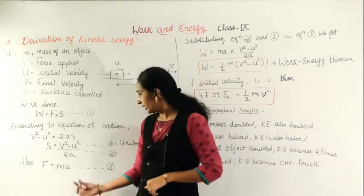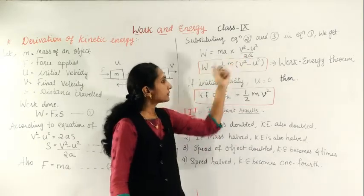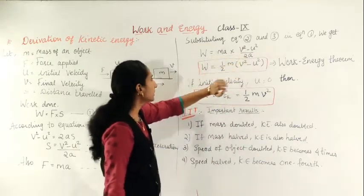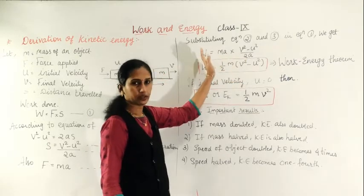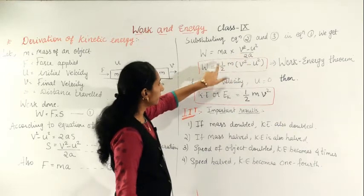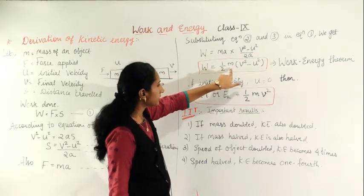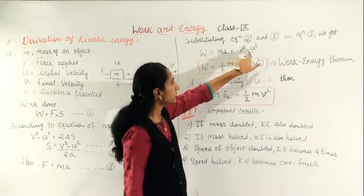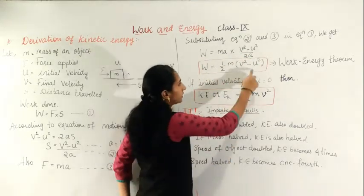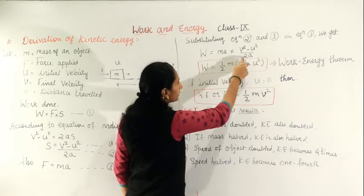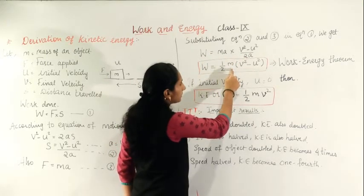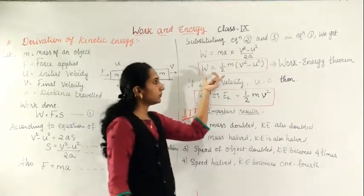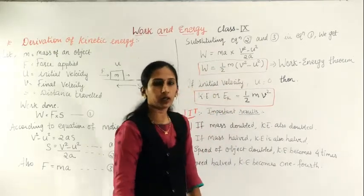Substituting: W = F × s = ma × (v² − u²) / 2a. Now taking 2 outside as one-half, the mass m stays, and the a in the numerator and the a in the denominator cancel out. So we get W = ½m(v² − u²).